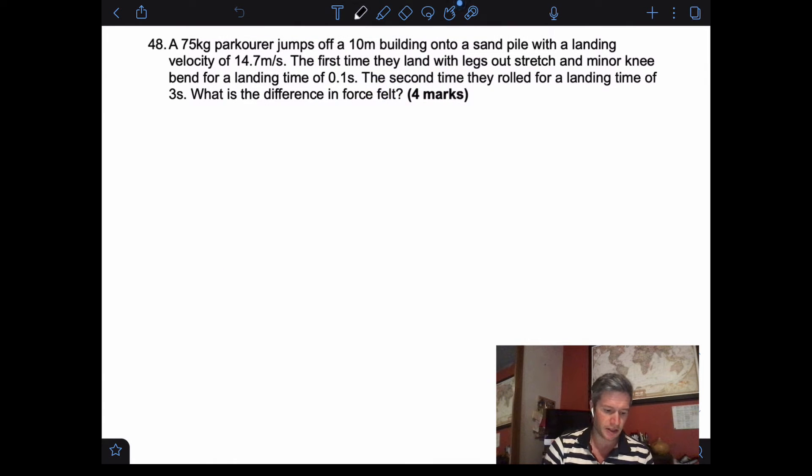So if we take a look at this question, a 75 kilogram parkour jumper, someone who does parkour, jumps off a 10 meter building onto a sand pile with a landing velocity of 14.7 meters per second. If we look back at what we did in the first half of the class with our free fall objects and acceleration of gravity and distance to time, we'll find that that value is pretty close.